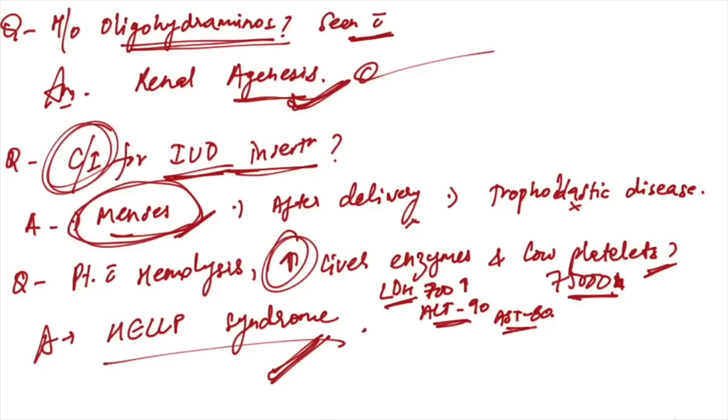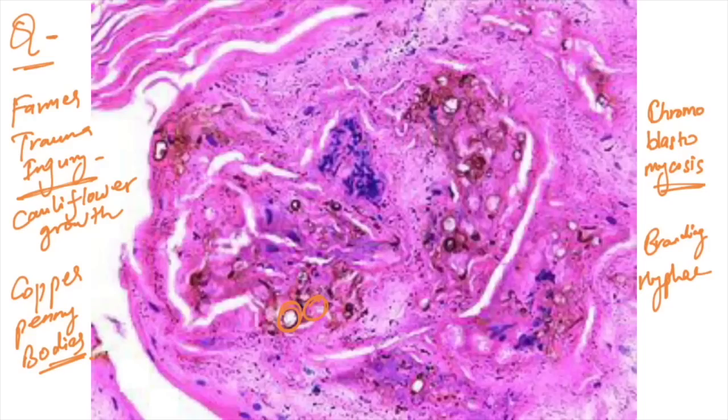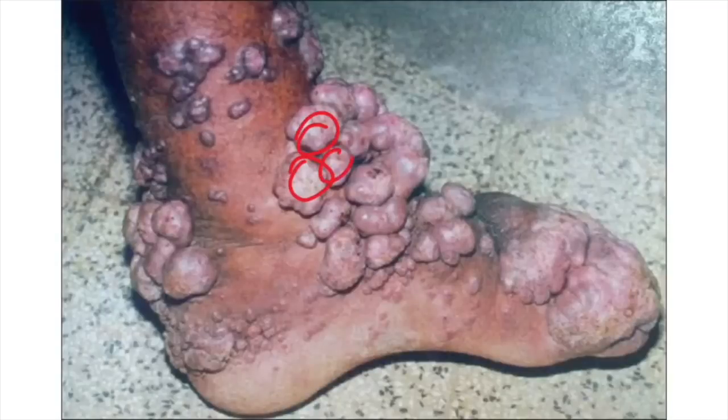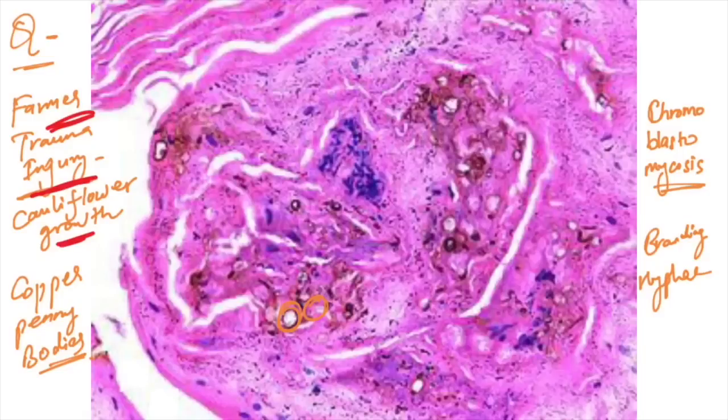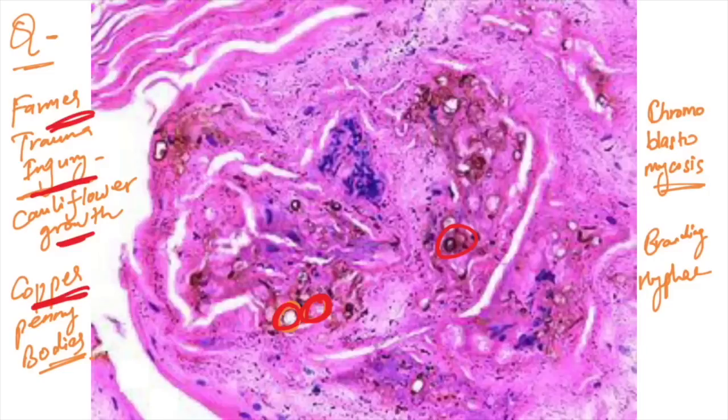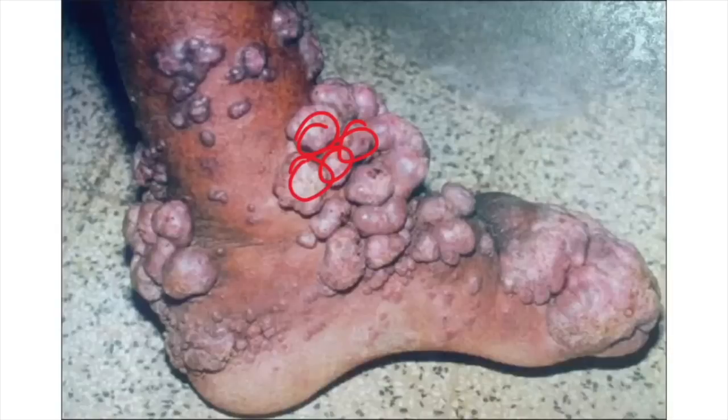This slide was given. History of farmer with trauma injury with cauliflower growth over the leg. You can see cauliflower growths on the legs. In histology, copper penny bodies are seen, branching hyphae are seen. The answer is chromoblastomycosis. All features are suggestive of that only.